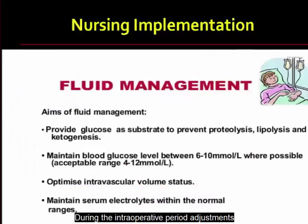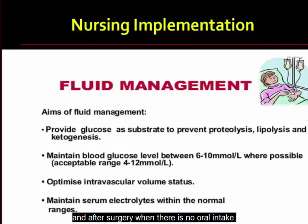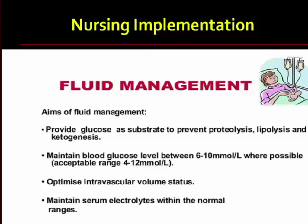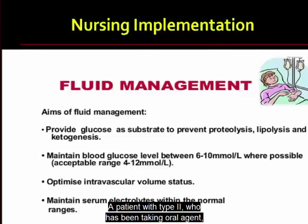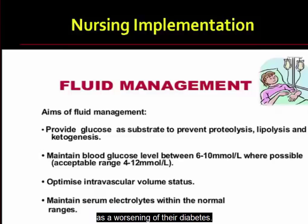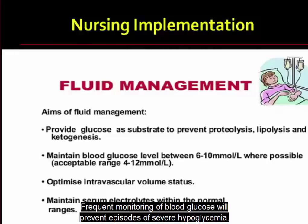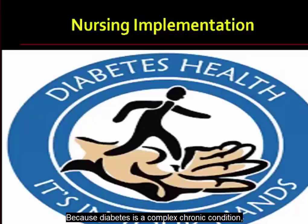During the intraoperative period, adjustments in a diabetes regimen can be planned to ensure glycemic control. A patient is given IV fluids and insulin if needed immediately before, during, and after surgery when there is no oral intake. A patient with type 2 diabetes who has been taking oral agents should understand that this is a temporary measure and should not be interpreted as a worsening of their diabetes. When caring for an unconscious surgical patient receiving insulin, be alert for hypoglycemic signs like sweating, tachycardia, and tremors. Frequent monitoring of blood glucose will prevent episodes of severe hypoglycemia.